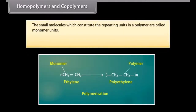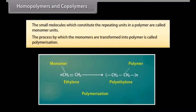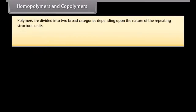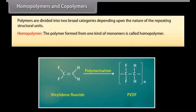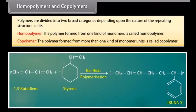The small molecules which constitute the repeating units in a polymer are called monomer units. The process by which monomers are transformed into a polymer is called polymerization. For example, polyethylene is a polymer obtained by the polymerization of ethylene; the ethylene molecules are referred to as monomer units. The polymer formed from one kind of monomer is called a homopolymer — for example, PVDF, formed from vinylidene fluoride. The polymer formed from more than one kind of monomer is called a copolymer — for example, Buna-S rubber, formed from 1,3-butadiene and styrene.